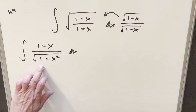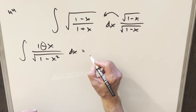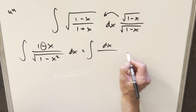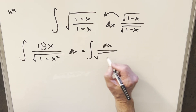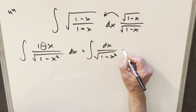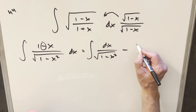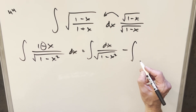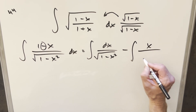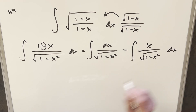We can take this and split it up on the minus sign into two integrals. For the first one, we're going to have dx over square root of 1 minus x squared. For the second one, I'll bring out the minus sign between the integrals and write this as x over square root of 1 minus x squared dx.